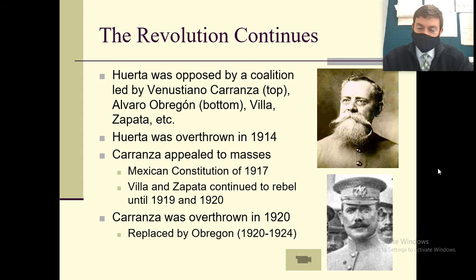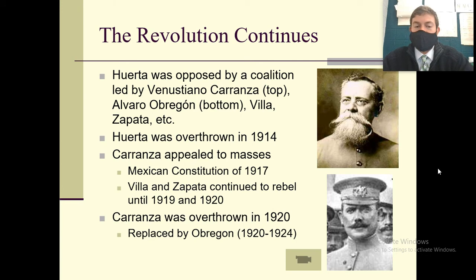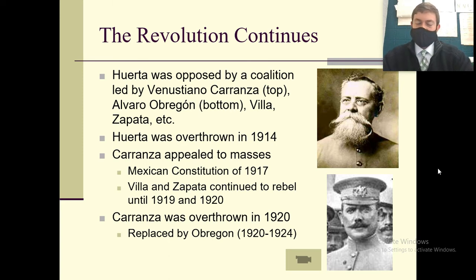After Huerta became president, a few years later he gets overthrown by a group of Carranza, Obregón, Villa, and Zapata. They joined together and overthrew Huerta in 1914. Carranza was better liked and he helped implement the Mexican Constitution in 1917. Villa and Zapata continued to rebel because they weren't quite satisfied with what was going on. They finished rebelling around 1919 and 1920. And then Carranza was overthrown in 1920 by Obregón. There was a lot of back-and-forth backstabbing because each person had a different agenda.